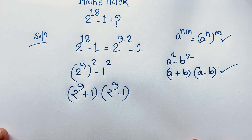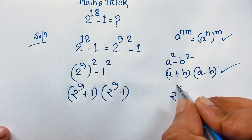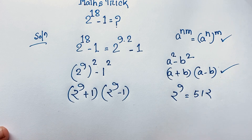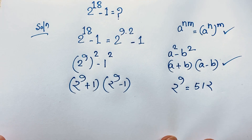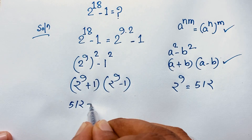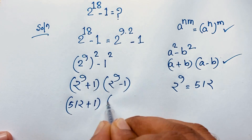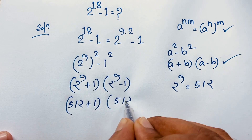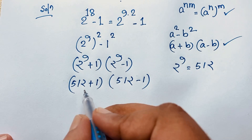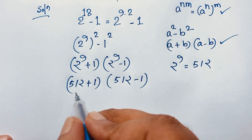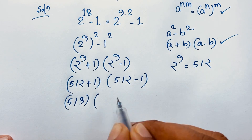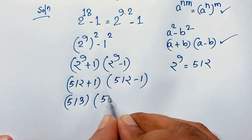Now, 2 to the power 9 is equal to what? 2 to the power 9 will be 512. So if I take this below here, it will be 512 plus 1, and in the same case, 512 minus 1. Then 512 plus 1 will be 513, and 512 minus 1 will be 511.